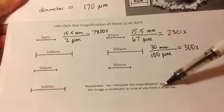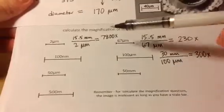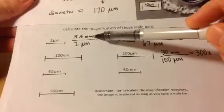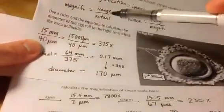And remember, the image is not really relevant if you have the scale bar. So, basically you're going to measure the size on the paper, which is 15.5 millimeters, over the label. So, again, we're using this equation up here.